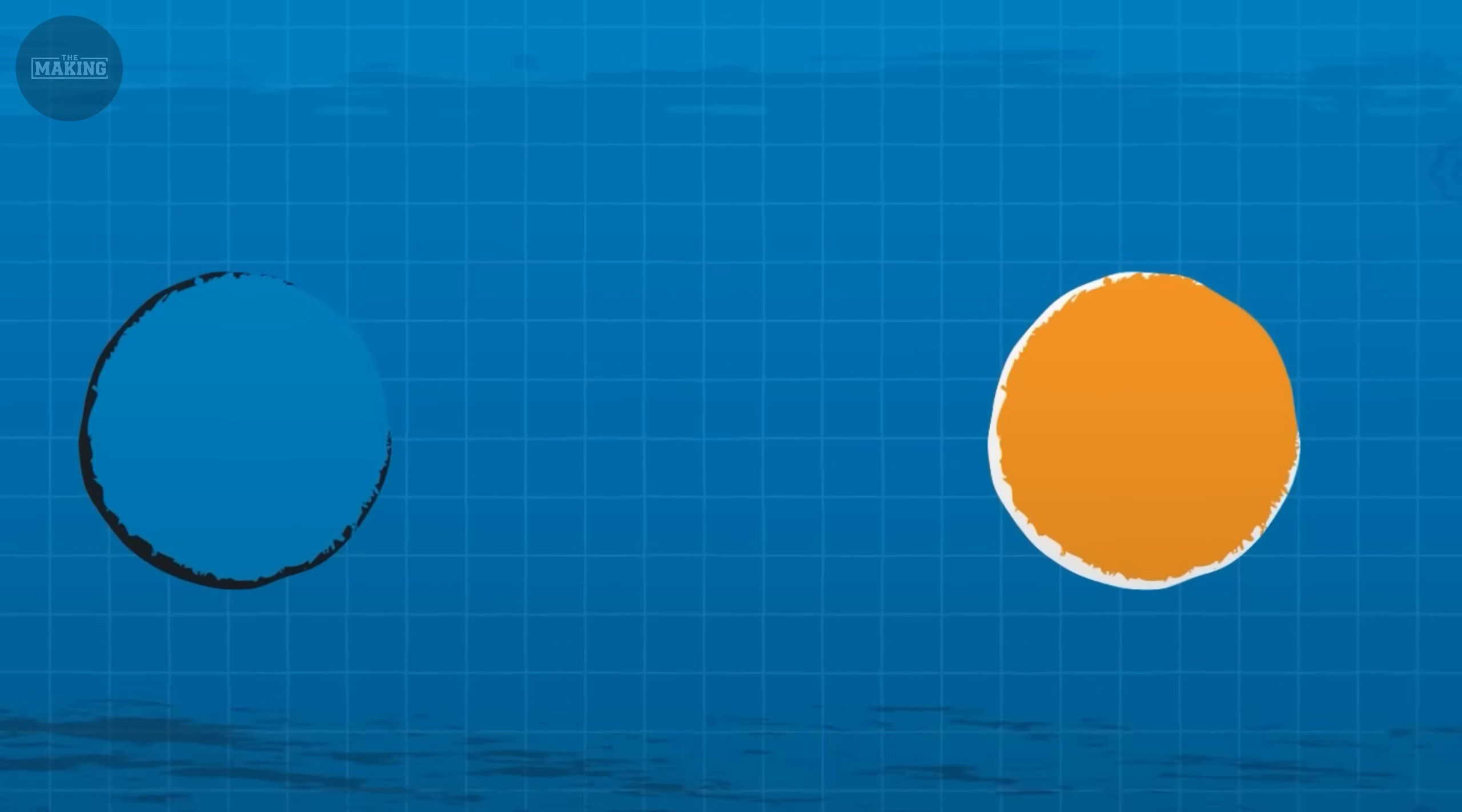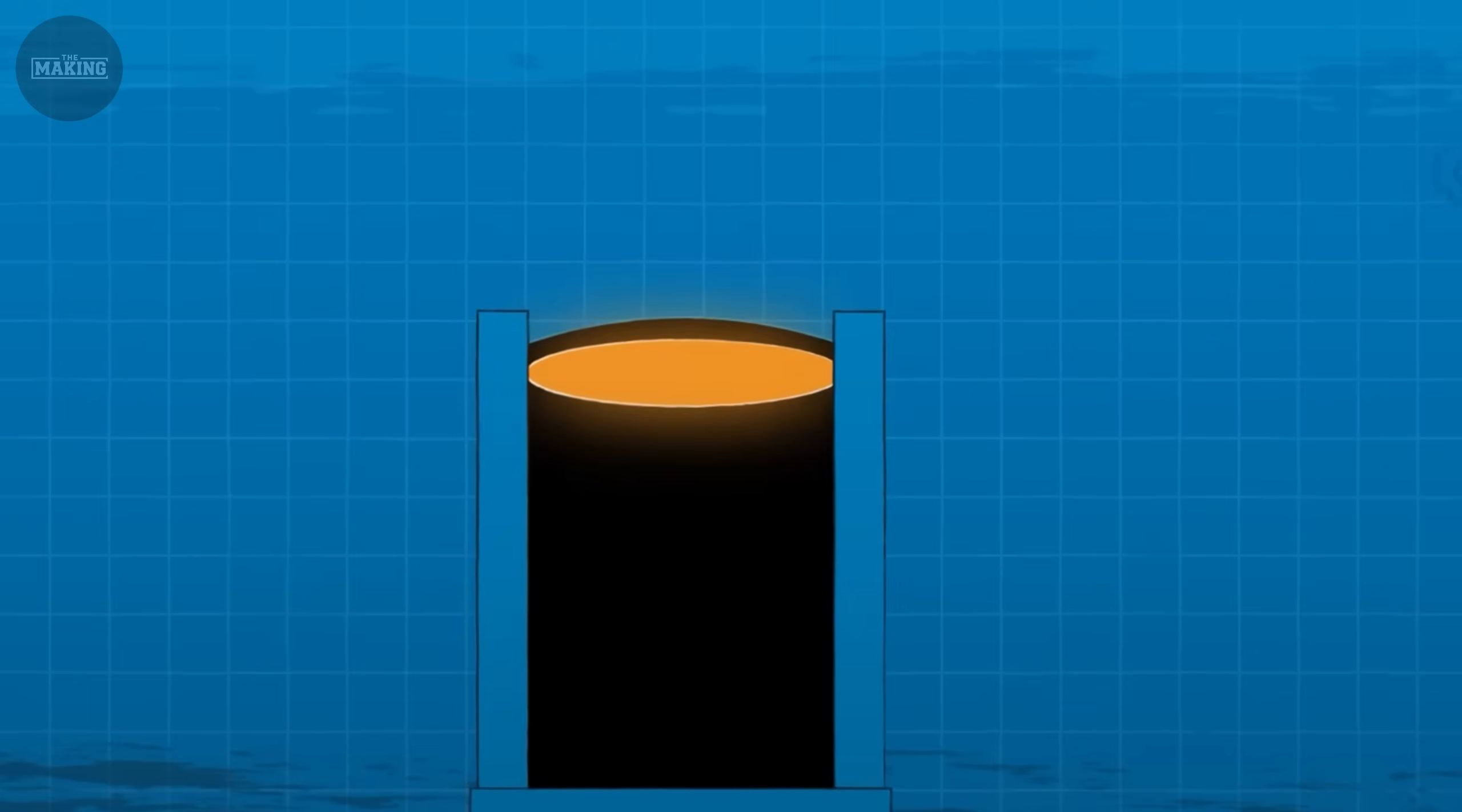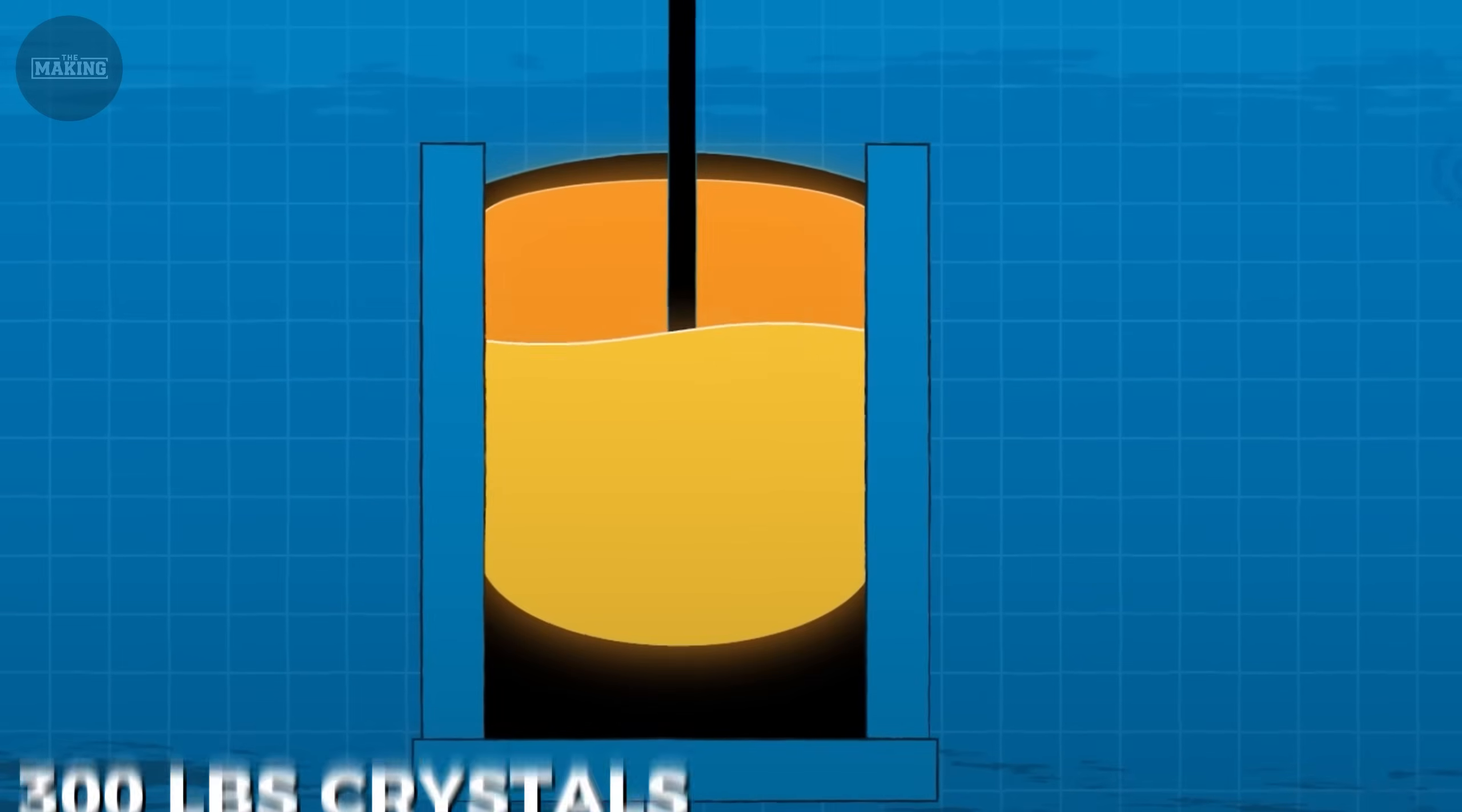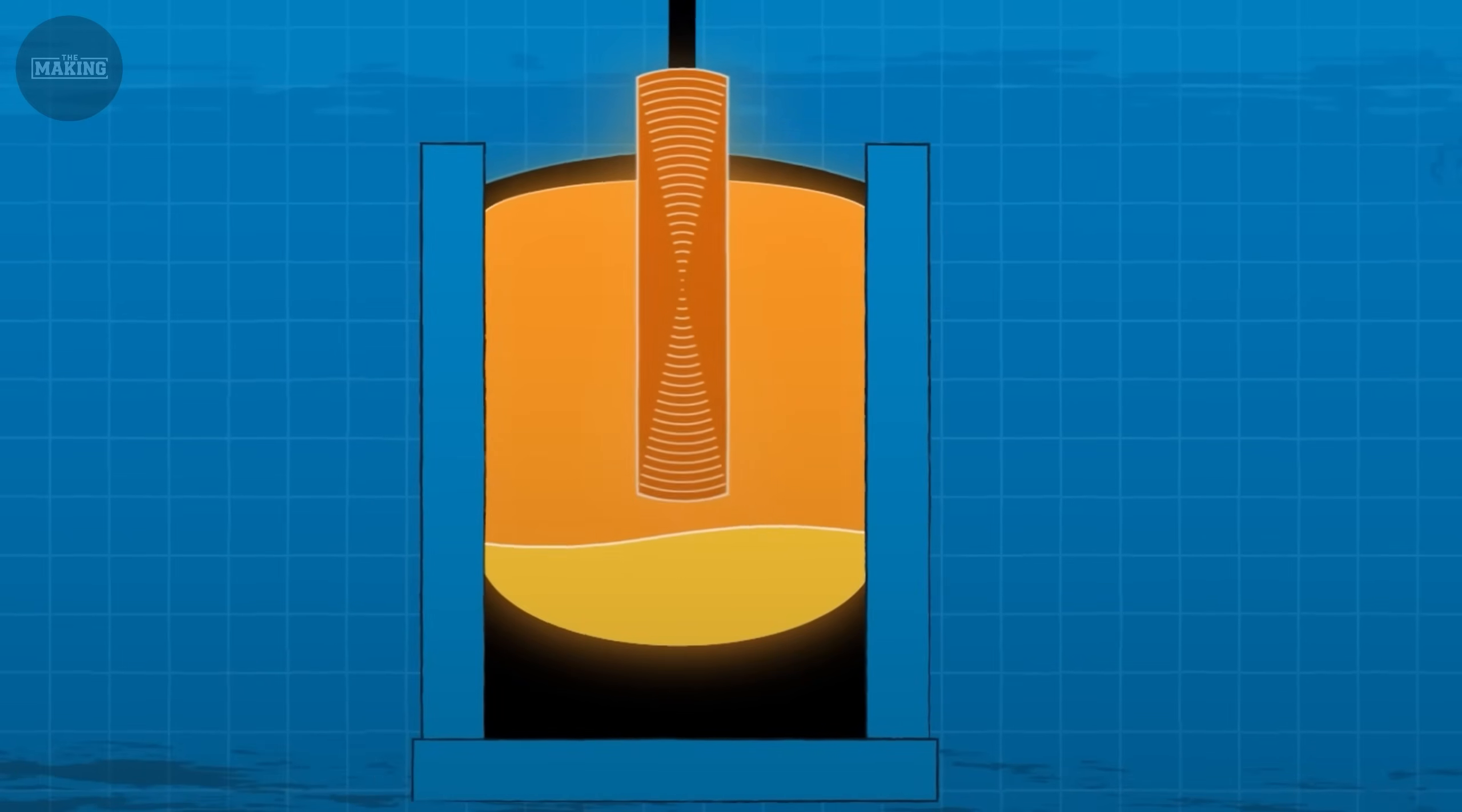These silicon ingots then get sliced into wafers thinner than a credit card using diamond wire saws. Each wafer will eventually hold hundreds of individual chips. But first it needs to survive the most complex manufacturing process on Earth.